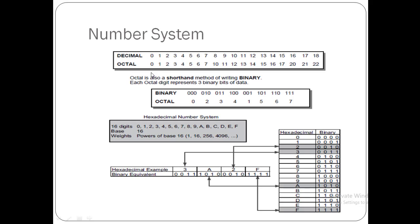The decimal system starts from 0 and goes 0, 1, 2, 3, 4, 5, 6, 7, 8, 9, 10, and goes further in the same way.